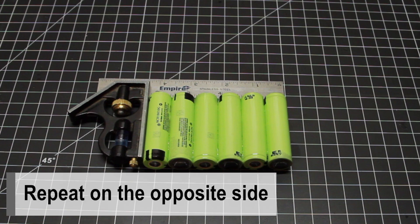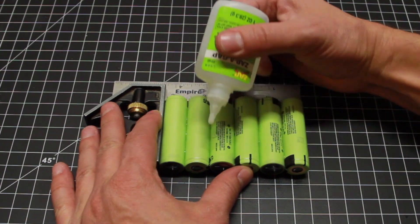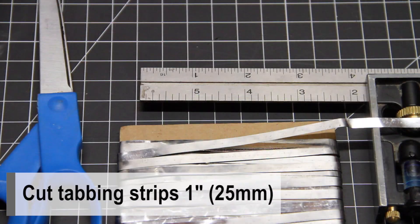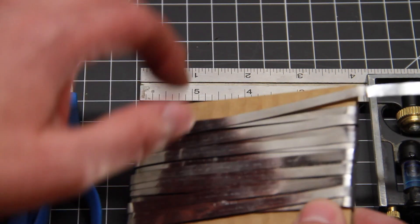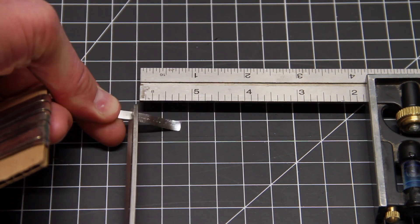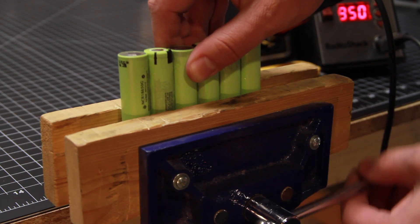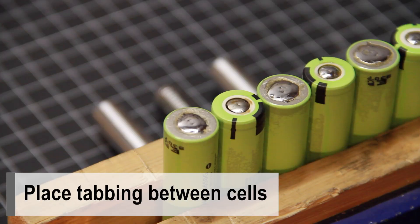Repeat the process on the opposite side. Cut 1 inch tabbing strips. Secure the battery pack. Place tabbing between cells.